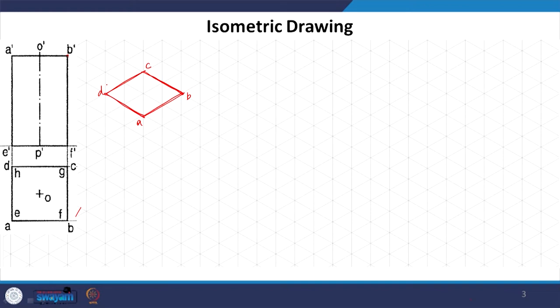If we look at it from the front, what we have is A, B — this is A, B, F and E. From A to B and then B to F, we have a certain height given. So we arrive at F and we arrive at E. This is what you see in the front elevation — that face.